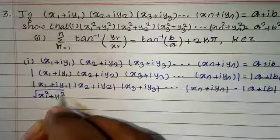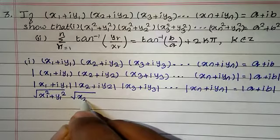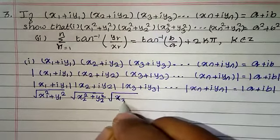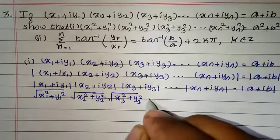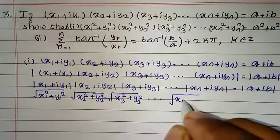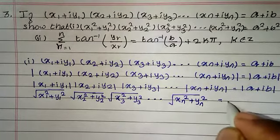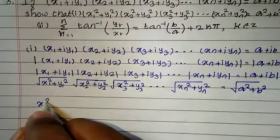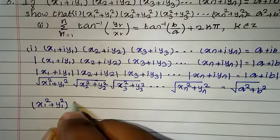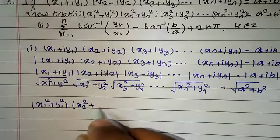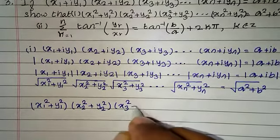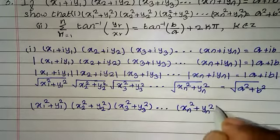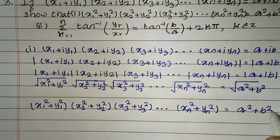So root of x1² + y1² into root of x2² + y2² into root of x3² + y3² and so on, root of xn² + yn² equals root of a² + b². Squaring on both sides we get x1² + y1² into x2² + y2² into x3² + y3² and so on, xn² + yn² equal to a² + b².